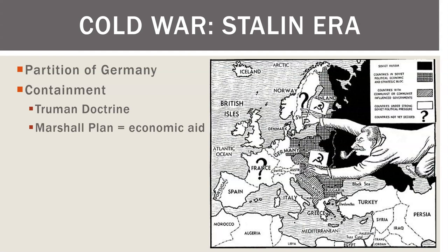Stalin was threatening Greece and Turkey, so we offered Western European countries money. I always tell my students: when the Europeans talk about how we wouldn't have a country unless they helped us — that's true — but we saved them in World War I and World War II, and then we rebuilt their countries. The Marshall Plan is economic aid designed to tamp down the spread of communism.